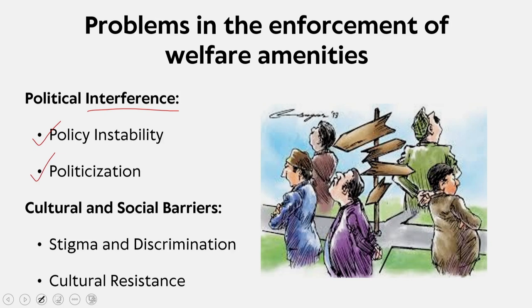There are also dimensions of cultural and social barriers. There is stigma—someone using a welfare scheme might be stigmatized. There might be social stigma and discrimination based on gender, caste, ethnicity, or disability that can prevent certain groups from accessing welfare services. When you extrapolate concepts of ableism and discrimination from organizational behavior to the welfare amenity scheme, we understand how cultural and social barriers end up as stigma and discrimination.